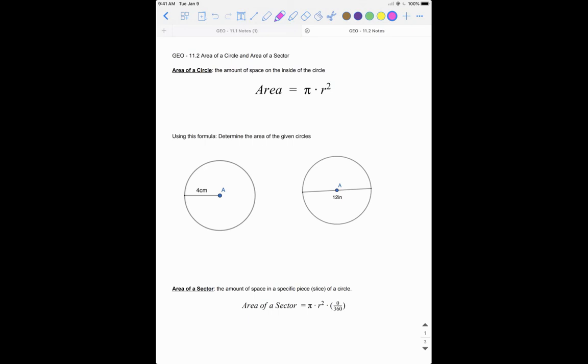First, we're going to talk about area of a circle. Area of a circle is how much space is on the inside. We talked about circumference, which was the distance around the circle last time. Now we're going to talk about area, which is how much space it takes up.